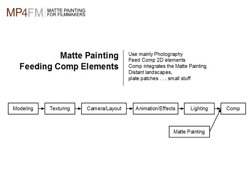Matte painting feeding comp elements is the first and simplest way matte painting fits into a VFX pipeline. In this scenario, matte painting is somewhat detached from the whole pipeline but comes right before comp and feeds comp elements. This is where matte painting gets a plate, paints on top of it, then hands that off to the compositor to integrate the painted element into the shot. This can be anything from a distant landscape to a simple patch, and is for those one-off shots that need a quick turnaround.